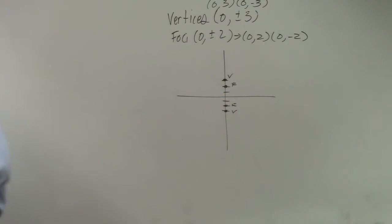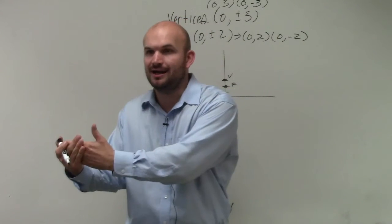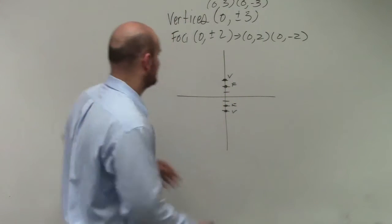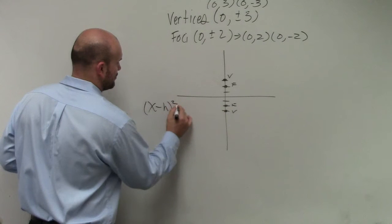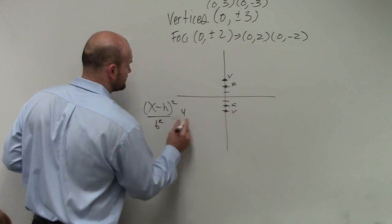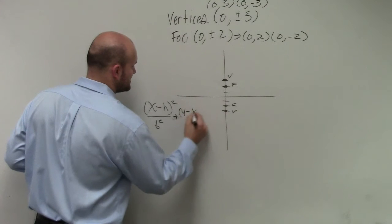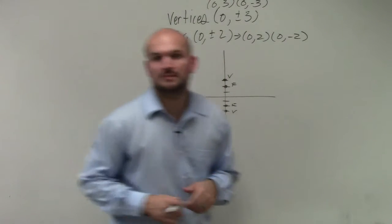So why is that important? Because now that I know it's vertical, I know should a be under the x or should a be under the y? Under the y. So my equation that I'm going to use is x minus h squared over b squared plus y minus k squared over a squared equals 1.